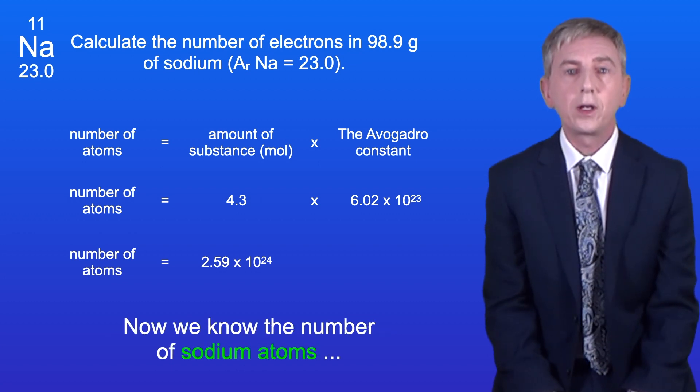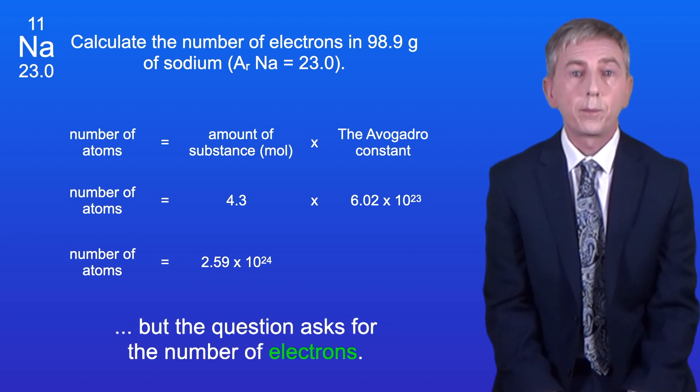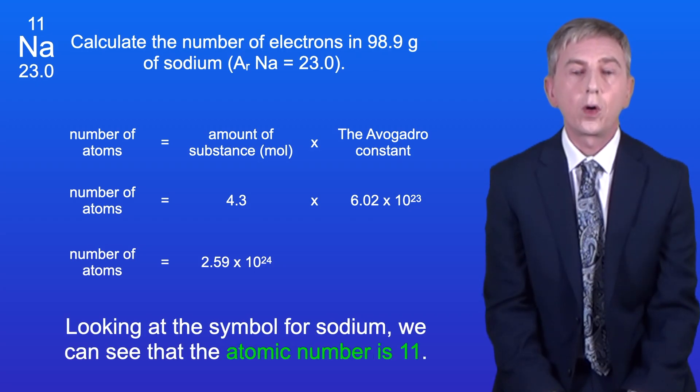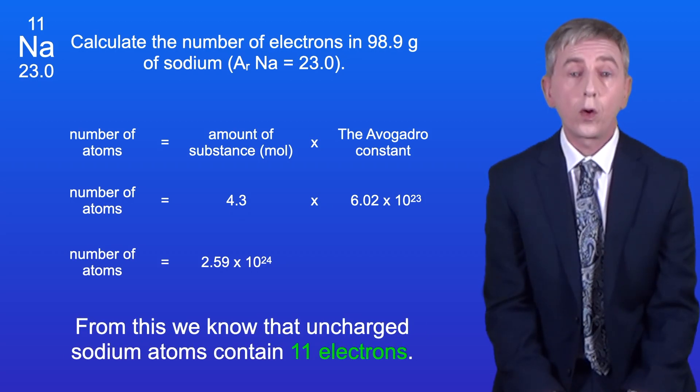Okay, so now we know the number of sodium atoms, but the question asks for the number of electrons. Looking at the symbol for sodium we can see that the atomic number is 11. From this we know that uncharged sodium atoms contain 11 electrons.